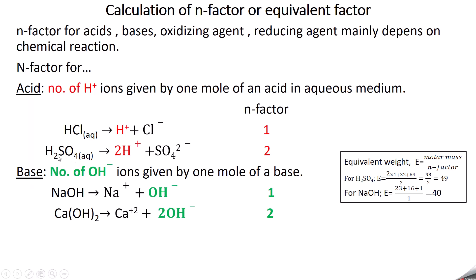H₂SO₄ decomposes to form 2H⁺ plus SO₄²⁻. Since 2 H⁺ ions are formed, its N factor is 2. So for an acid, the number of H⁺ ions — otherwise called basicity — gives the N factor.